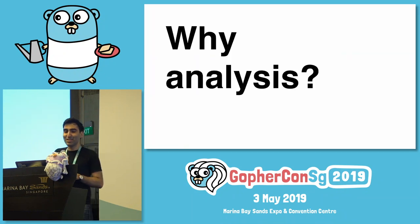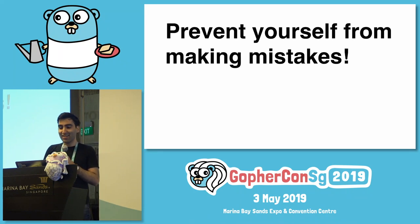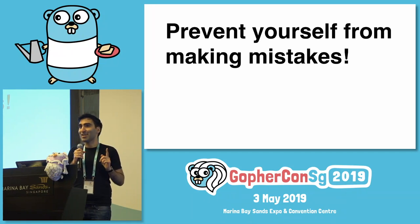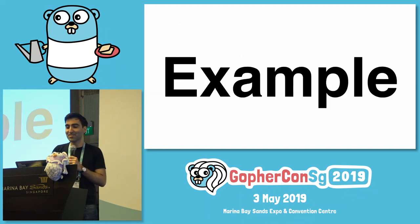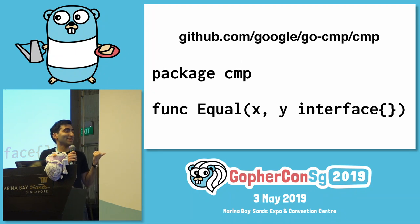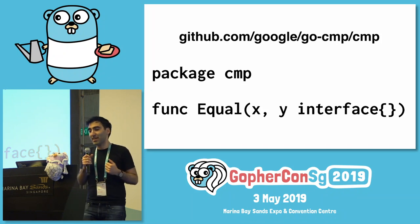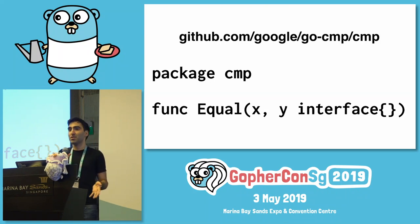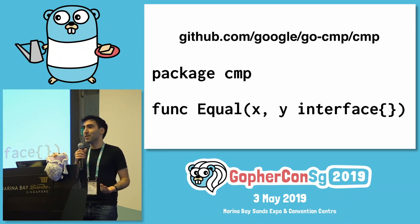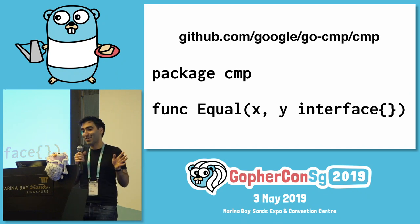Let's provide some motivation for why to use analyses. In this talk, I'm going to be focusing on preventing yourself from making mistakes when you're writing code. So let's take a look at a concrete example. I love this package called the cmp package, developed by a colleague of mine on the Go team. It compares two values for equality, so you don't have to write your own equals method, and it's a better alternative to reflect.DeepEqual in your tests. I use it all the time.